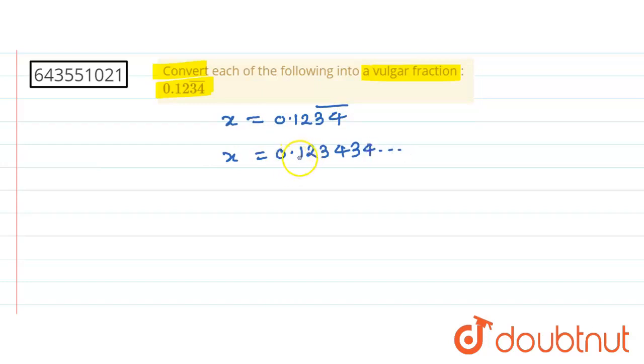Okay, so as two digits are repeating, multiply by 100. So what I get, this is 100x is equal to 12.3434.